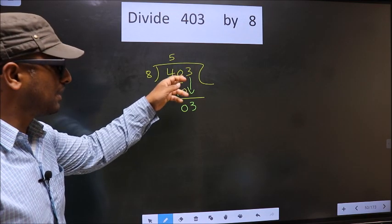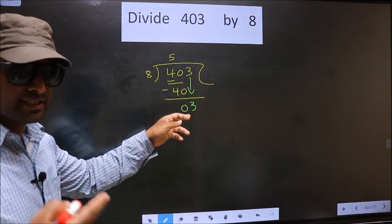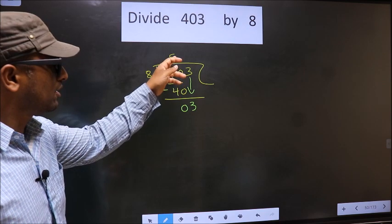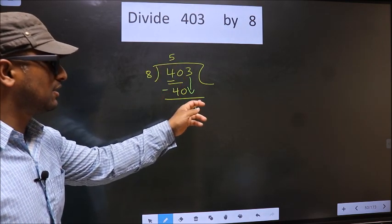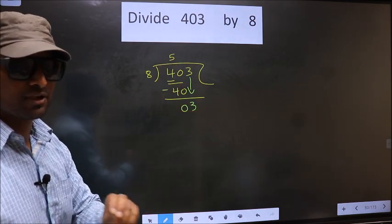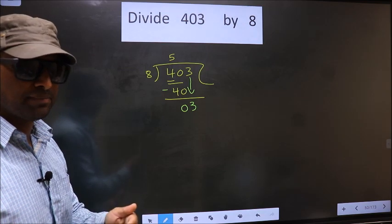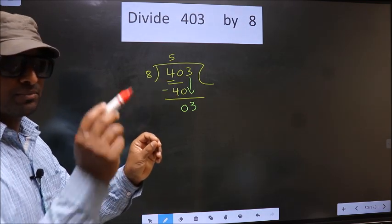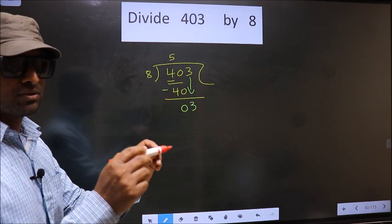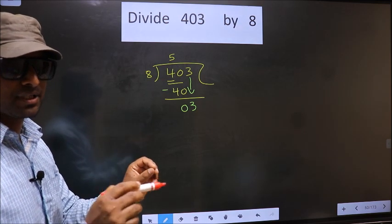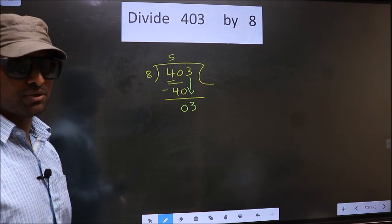Just now you brought the number down, and in the same step you want to put a dot and take zero here, which is wrong. I repeat: bringing the number down and putting a dot and taking zero, both at the same step, you are not supposed to do.